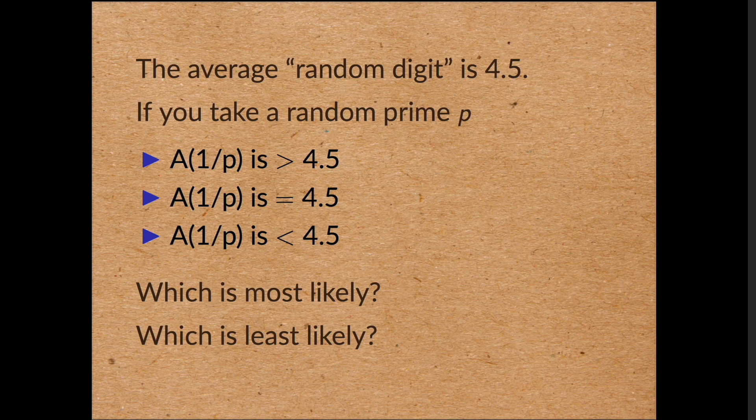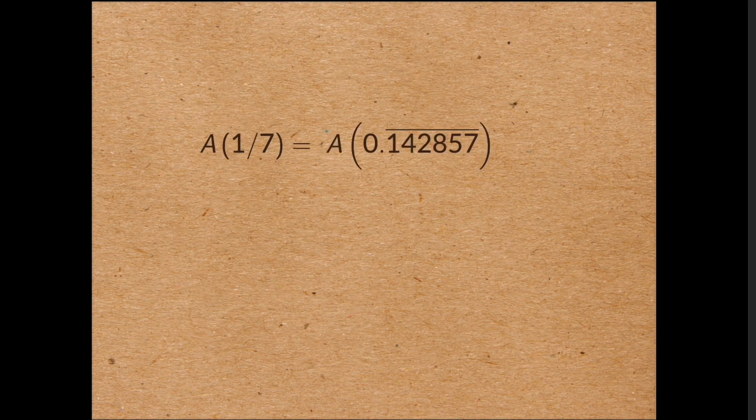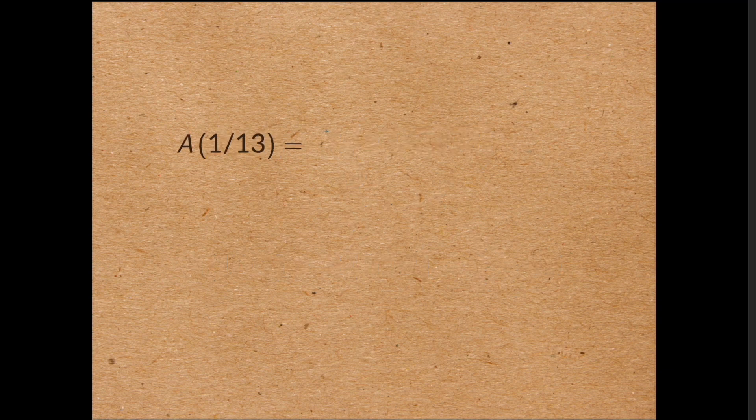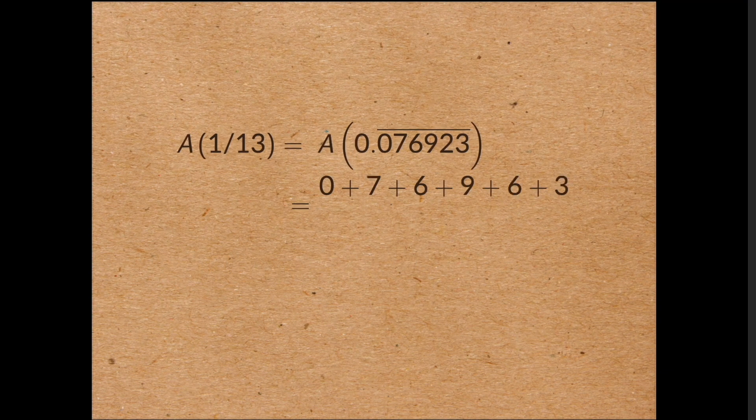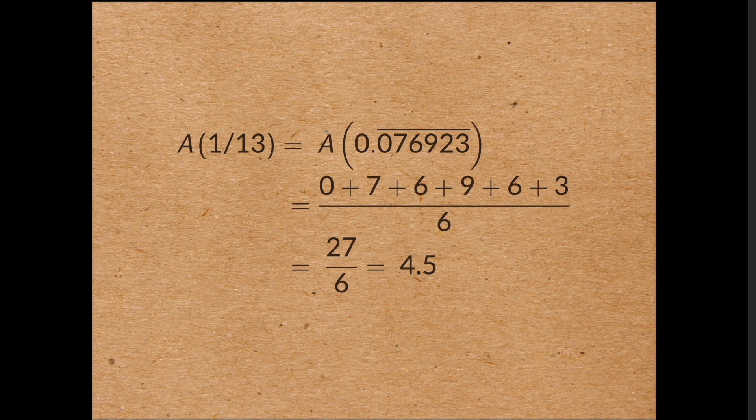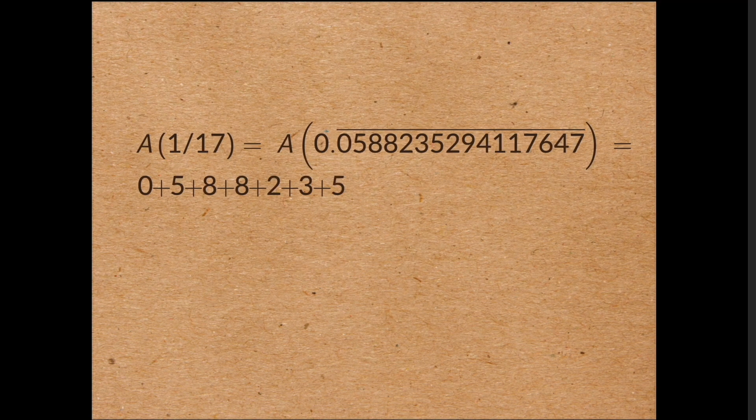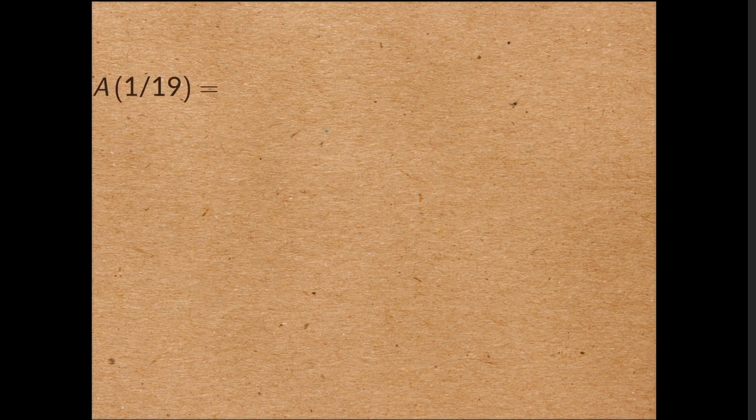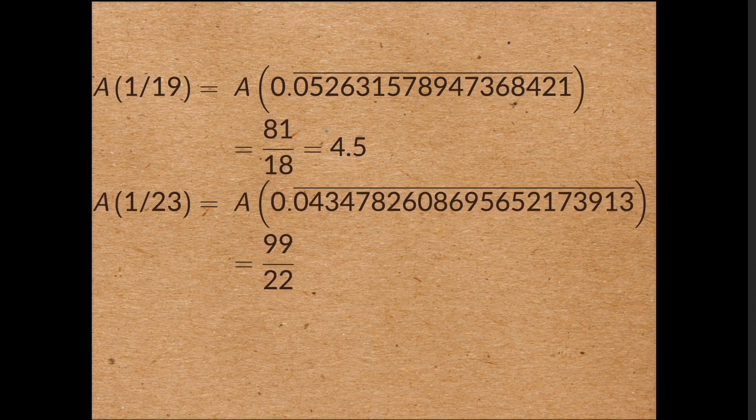Let's see what happens for the first few primes. A of a seventh is equal to 4.5, A of 1 over 11 is equal to 4.5, A of a thirteenth is equal to 4.5, A of a seventeenth is equal to 4.5. A of a twenty-third is 4.5. We see that all the primes from 7 to 23 have an average digit sum that is exactly 4.5. This is no accident.